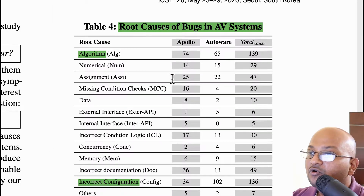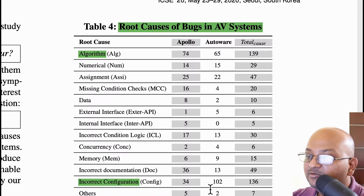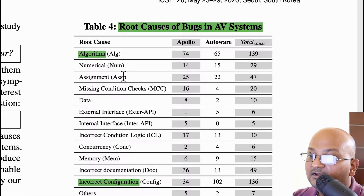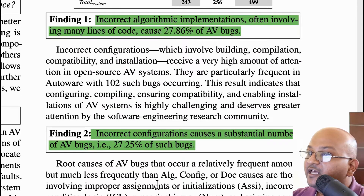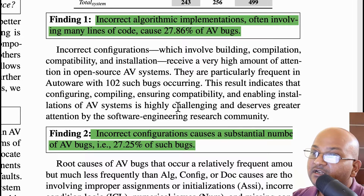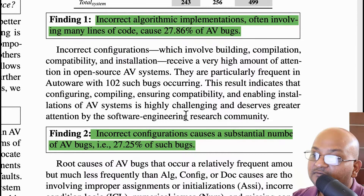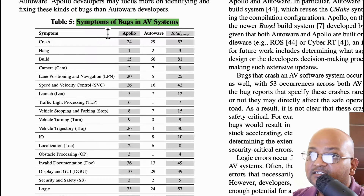Configuration consists of things like build files, fine-tuned parameter values, installation instructions, or Docker configuration files. Looking at what the authors found as root causes of these 500 bugs, there is a table summarizing them. The two leading causes are incorrectly implementing an algorithm and incorrect configuration, each accounting for nearly 30 percent of all bugs. Together, that's almost 60 percent of all bugs attributable to either incorrect algorithms or bad configuration.